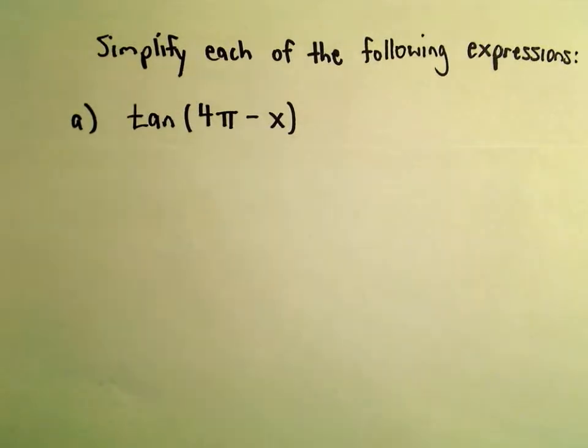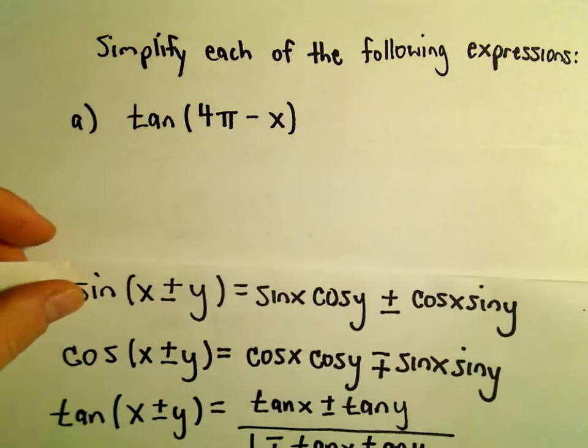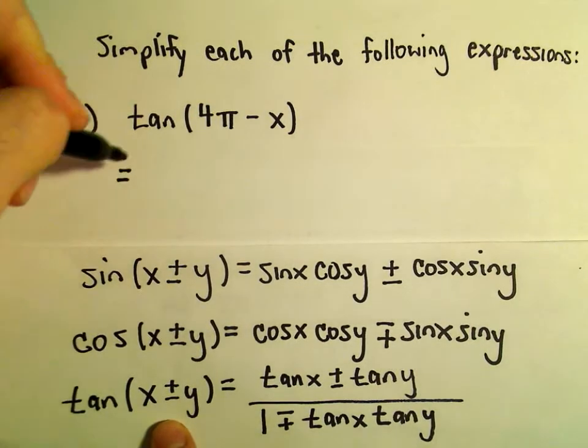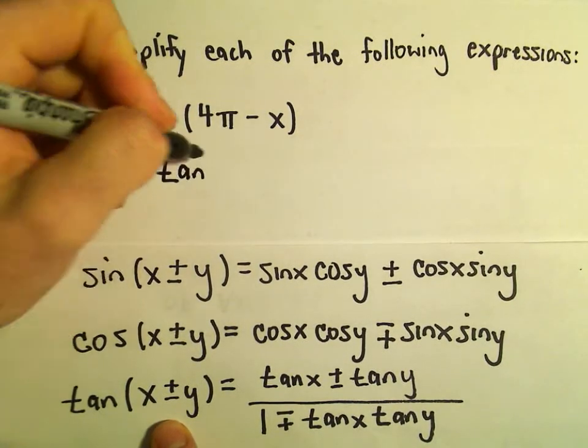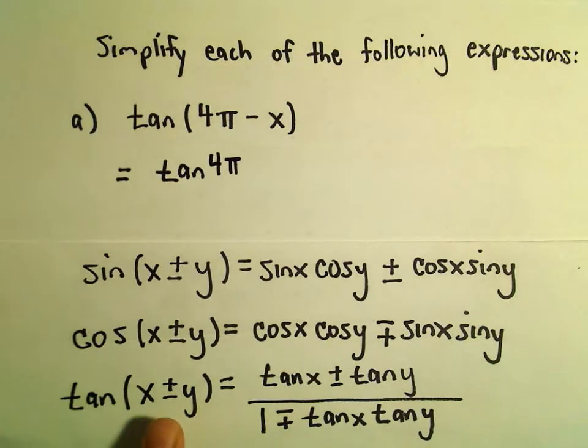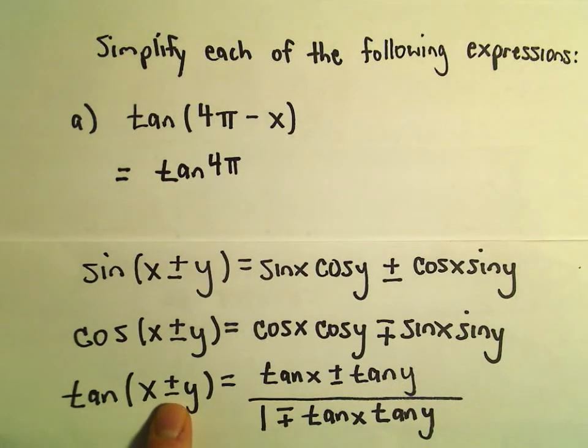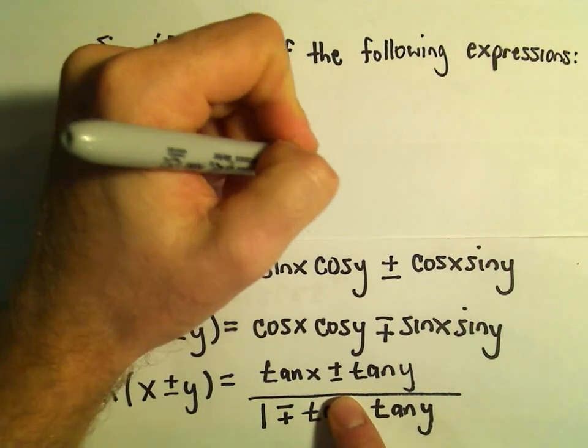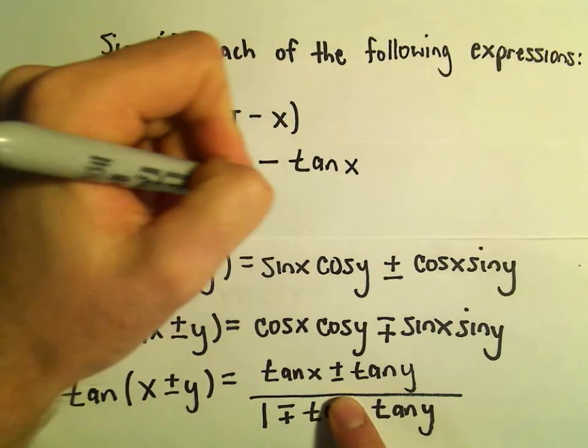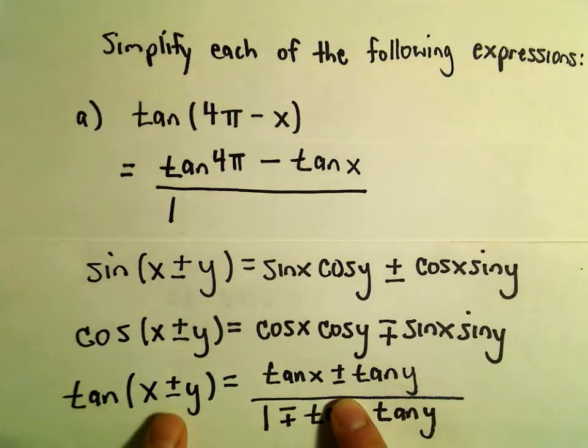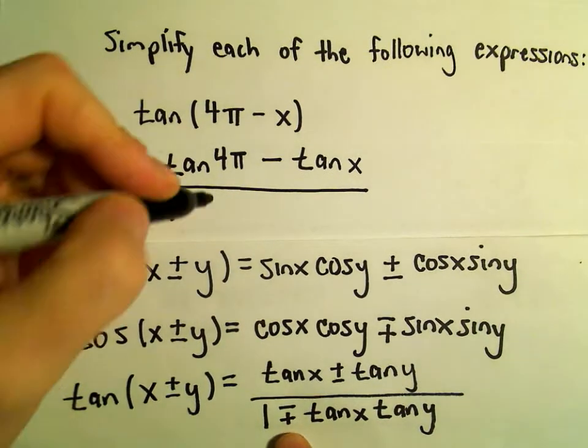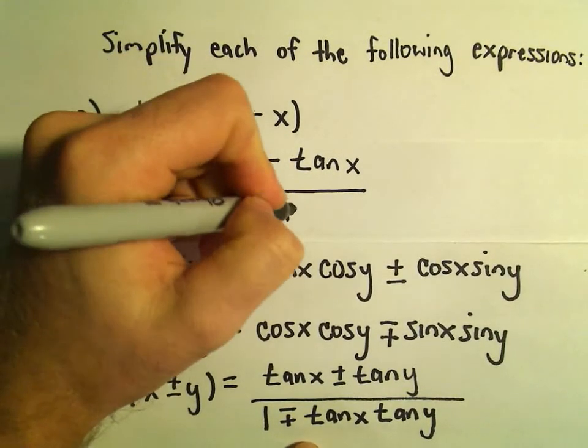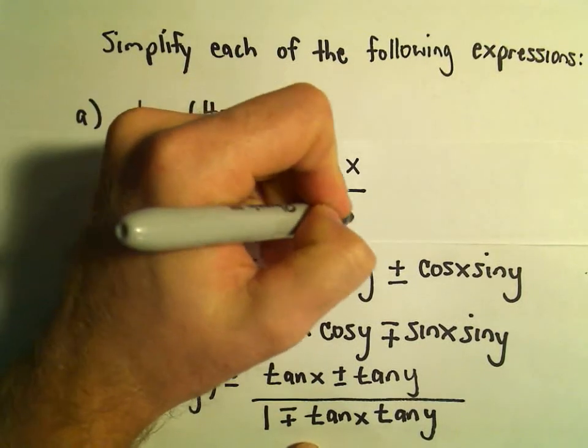So to do tangent of 4π minus x, recall we have our other identity. We've got our identity for tangent. In this case we'll simply get tangent of 4π. The identity says if there's a minus sign in between, in the numerator we preserve that minus sign. So we get tangent of 4π minus tangent of x. In the denominator it says we get 1. If there's a minus in between though, we actually use a plus sign now. So we'll get plus tangent of 4π times tangent of x.